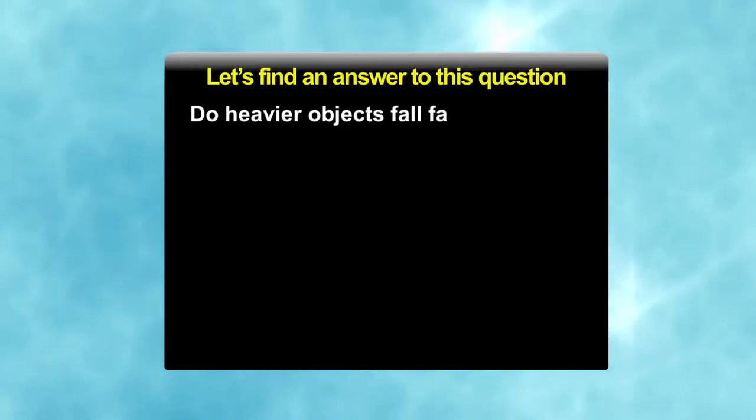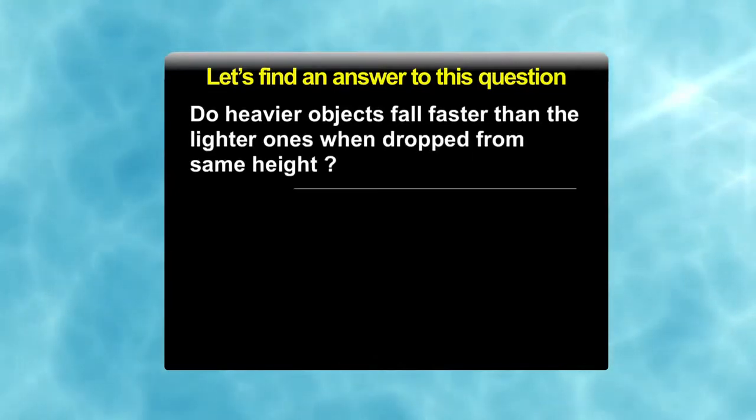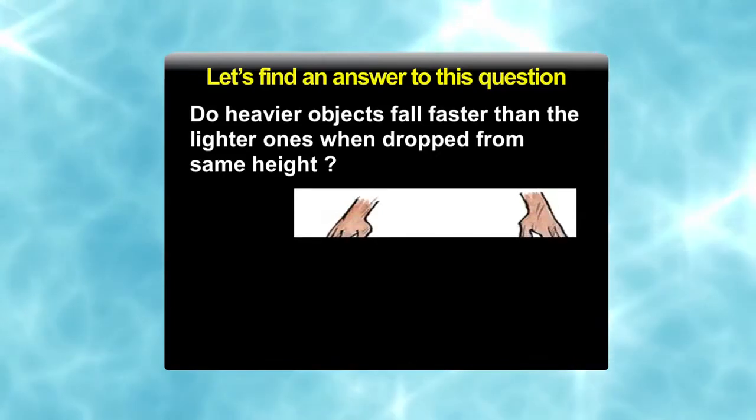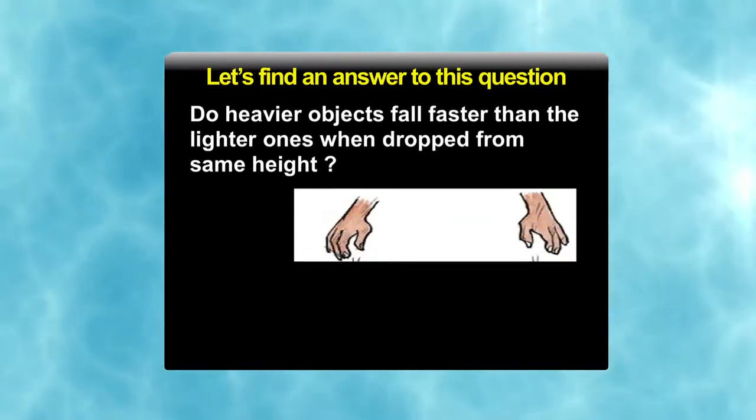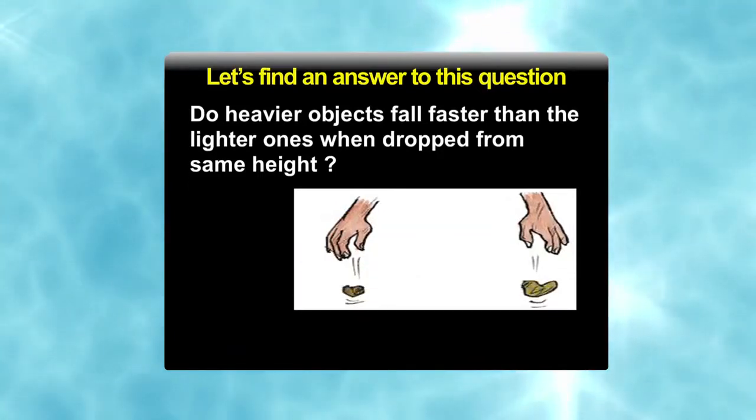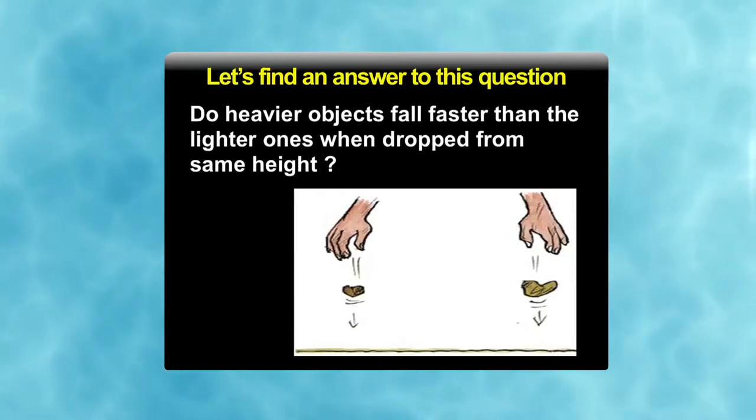Let us find an answer to this question. Do heavier objects fall faster than the lighter ones when dropped from same height? For this, let us perform this activity. Ask one of your friends to stand at the rooftop of a two-storey building with stones of different masses in his two hands. Ask him to drop these stones together. Carefully observe falling of stones. What do you find? Why do both these stones reach the ground at the same time?